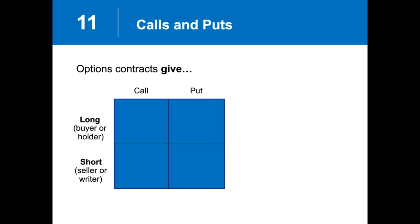If you are a call buyer or a put buyer, you are long the contract — you're the holder. If you are the seller or the writer of the option, you are short the contract. Don't confuse that with being long or short the market. In options terminology, long simply means you bought or own a contract, and short means you've sold or written a contract.